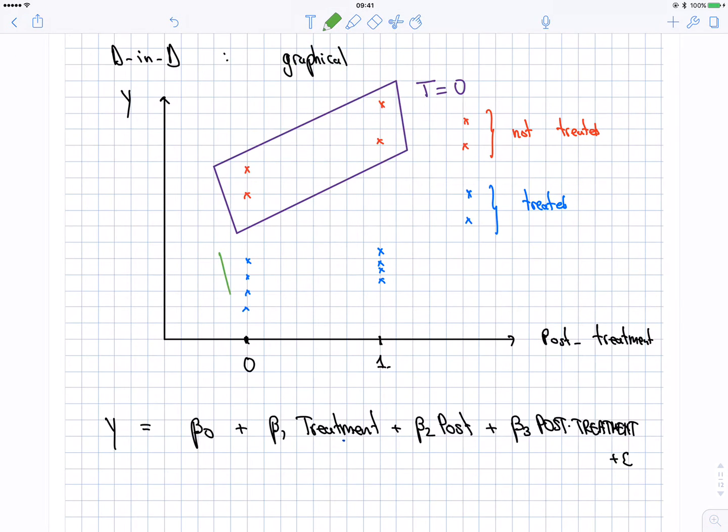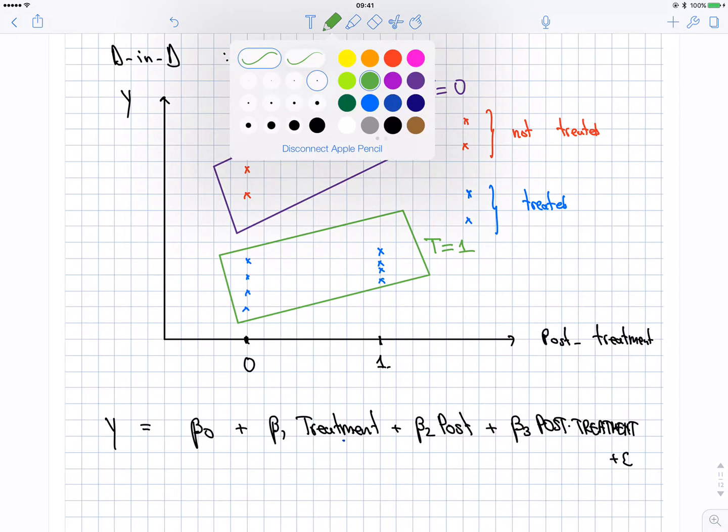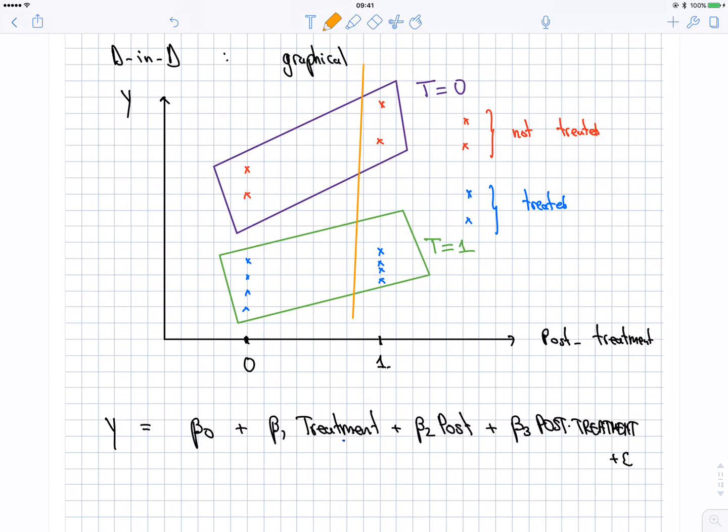So if you think about this group of people here, what do I know about this group of people here? What do I know about that group of people over there? I know that post is equal to one. This is all variables that are happening after the treatment. The treatment has already happened. Let's assume that the treatment happened somewhere in between. Well, I know that the treatment has already happened there. It's telling me from that equation over there.